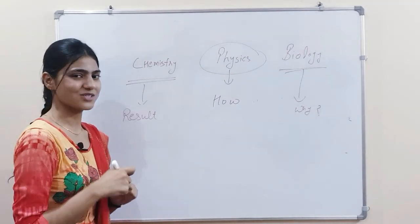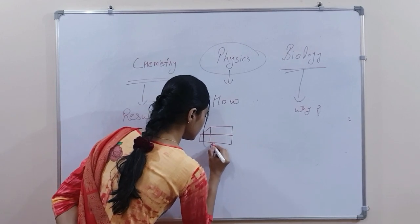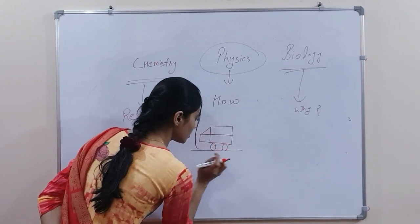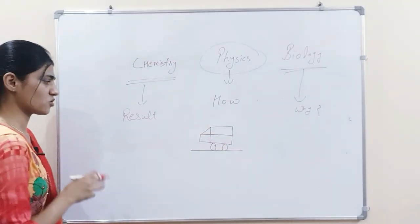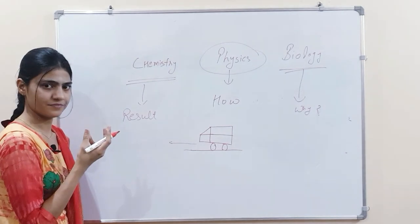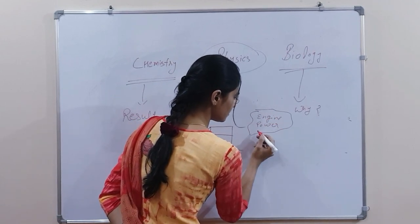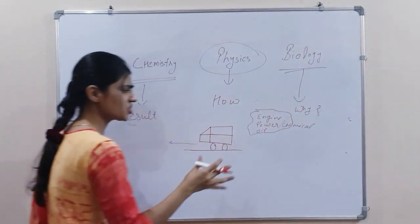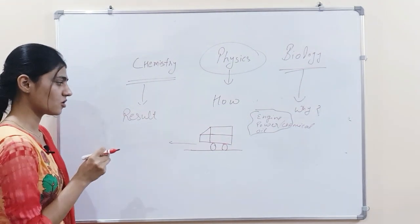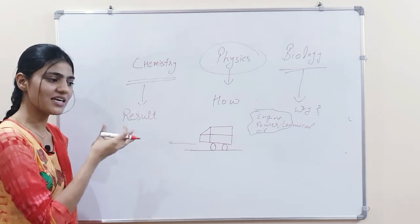Chalo ik example liekar samajan ke kooshish karteh. If our biologist has a car, he will think that if a car is going forward, then why? He will always think that what engine, power, oil, and any chemical composition is doing what is required to move this car in the forward direction.